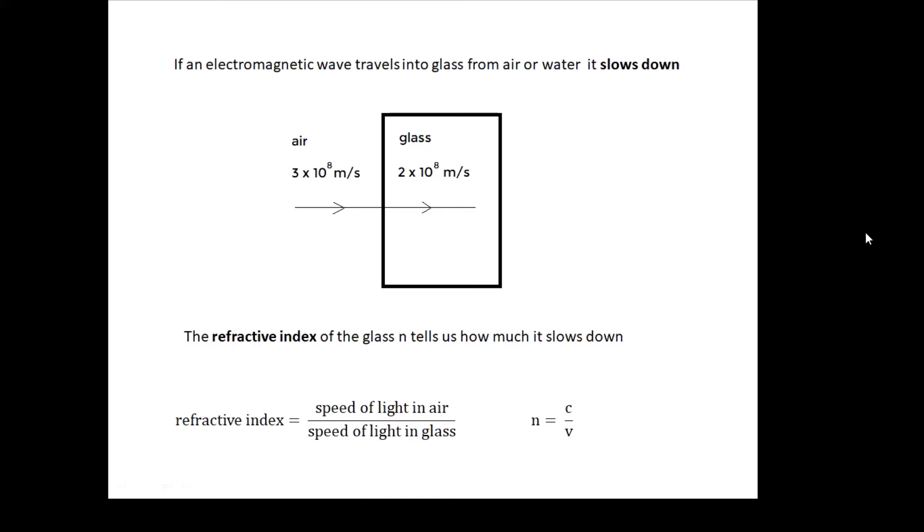The refractive index is the speed of light in air, in this case 3 × 10^8, divided by the speed of light in the glass, which is 2 × 10^8. So n equals c over v.